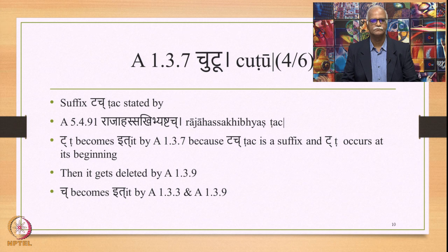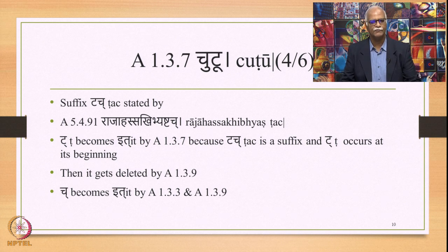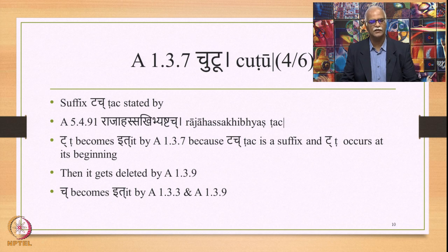Let us take one more example. Now we are looking at a consonant in the T class getting the term Ith. The suffix 'touch' is stated by 5.4.91 Rajahas Sakhibhyas touch. In 'touch', T appears at the initial position of this suffix. So T becomes Ith by 1.3.7, and then it gets deleted by 1.3.9. Similarly, the final Ch also becomes Ith by 1.3.3. Note that this Ch does not get the term Ith because of Chutu — because Chutu assigns the technical term Ith only to Ch which appears at the beginning, not the final position. So Ch will get the term Ith by 1.3.3 and then also be deleted by 1.3.9.